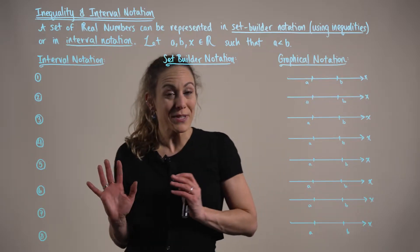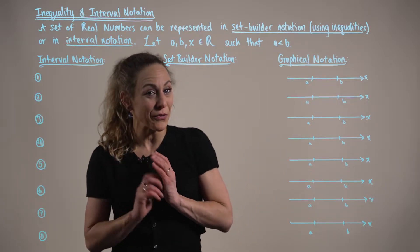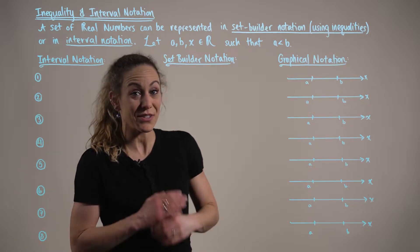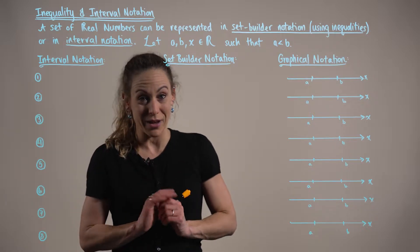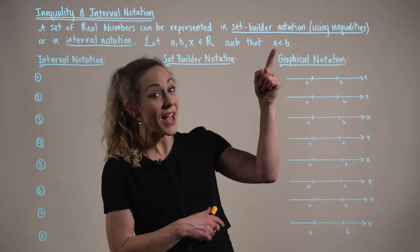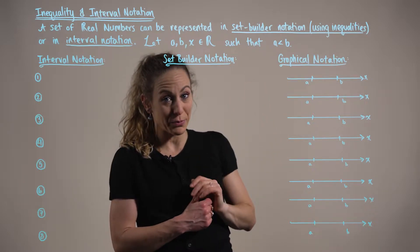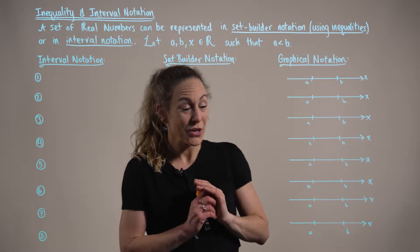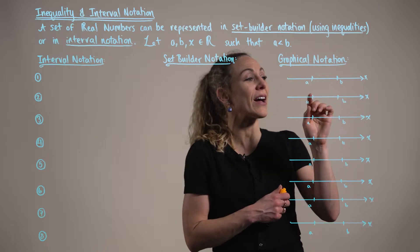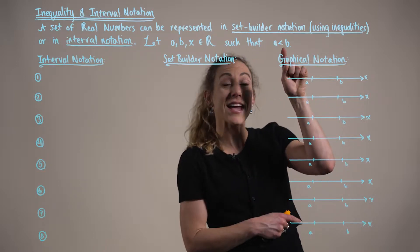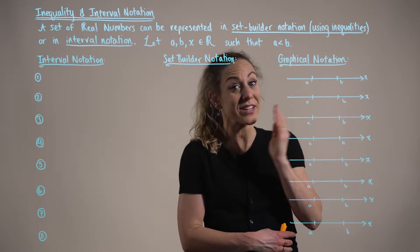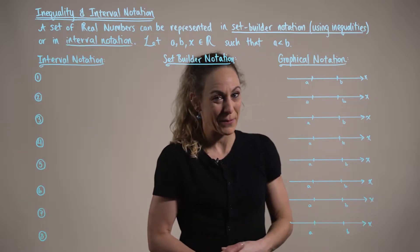For the purposes of this review, we let a, b, and x all be real numbers such that a is less than b. This means that when looking at the number line, if a is less than b, then a is always going to be to the left-hand side of b.